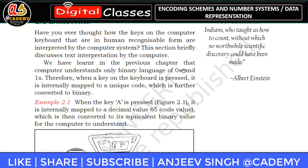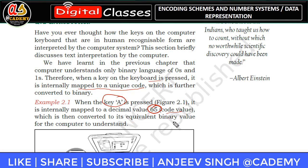So how does the keyboard work? Inside the keyboard, there is a mapping. Every character is mapped with a unique code. For example, the letter 'A' is mapped with the value 65. This is called a code value.